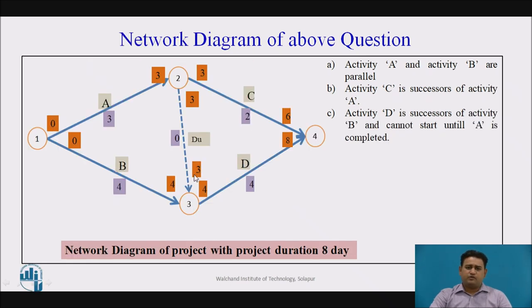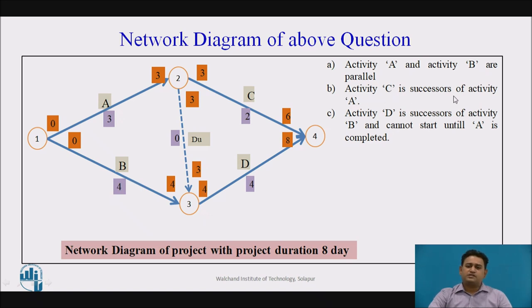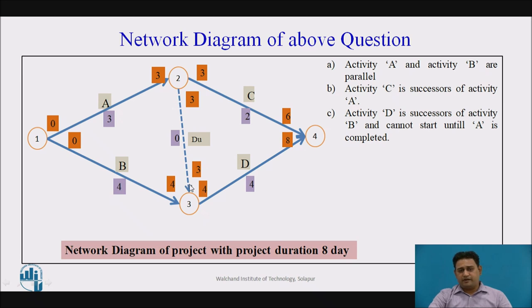Now, this is the network diagram of the particular activities. Activities A, B, C, and D are presented by arrows and their start and finish are represented by events. Activity A and activity B are the parallel activities. Activity C is the successor of activity A — after the completion of A, C starts. Activity D is the successor of activity B, but it will start only when A is also completed. To maintain this, I have used a dummy activity between events 2 and 3. This dummy activity does not consume any resource or time, but it is needed to maintain the logical integrity.